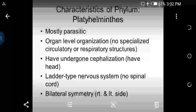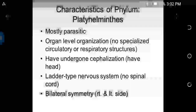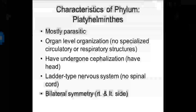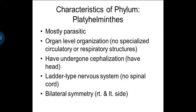The body organization level is of tissue-organ grade. These animals are triploblastic in nature, meaning three germ layers — ectoderm, mesoderm, and endoderm — are developed during embryonic development.